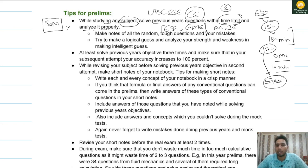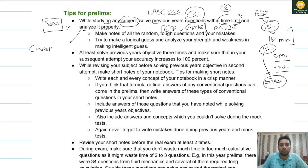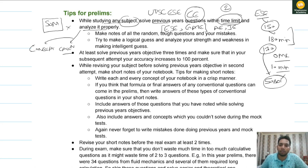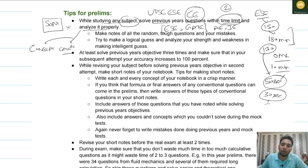After attempting questions, you have to analyze your mistakes — whether you made a calculation mistake or there is a problem with your concept. There are only two types of problems: either your concept is not correct, or your calculation is not correct. Your reading skills also need to be good, because you have only 50 seconds and if just reading the question takes 30 seconds, you won't be able to solve the paper.